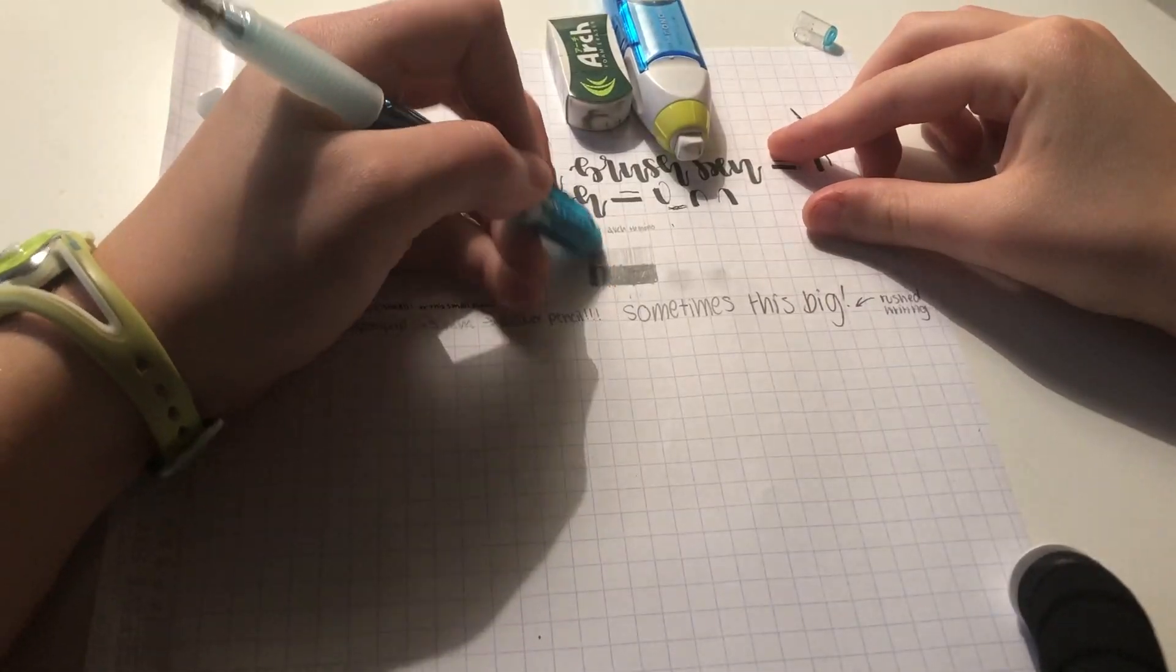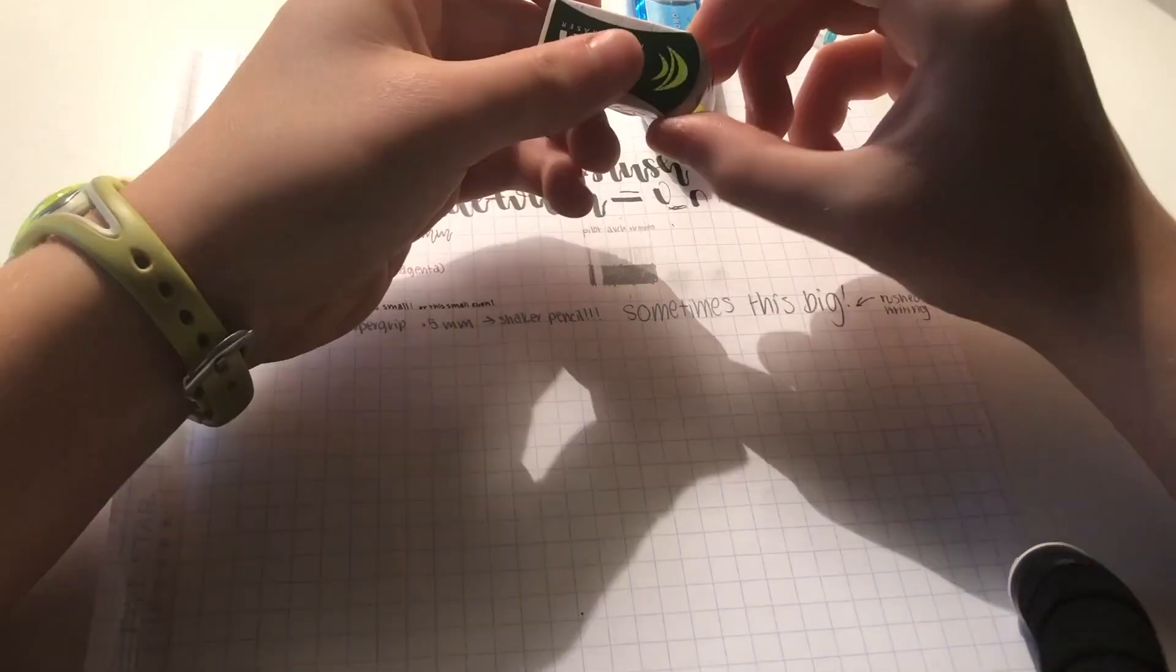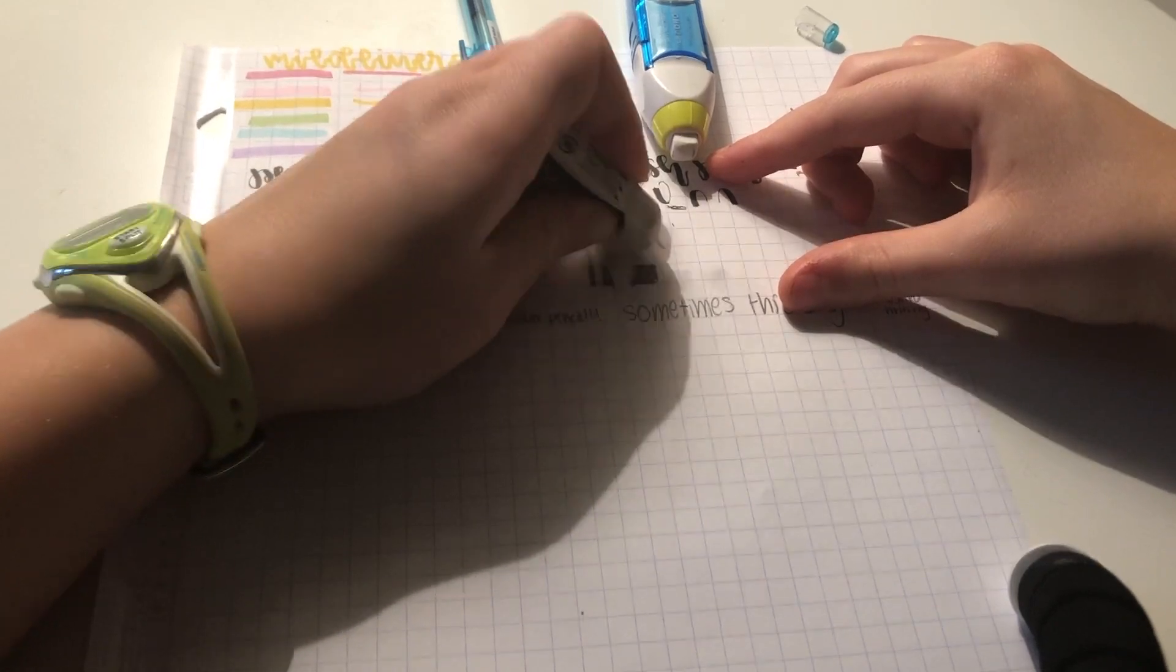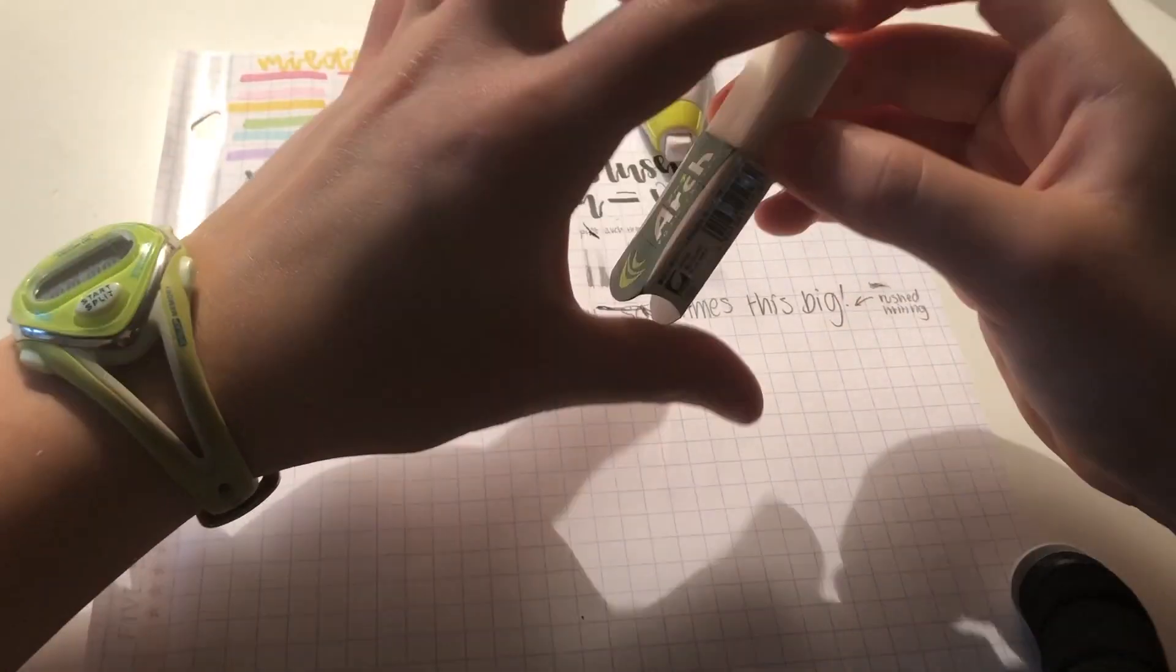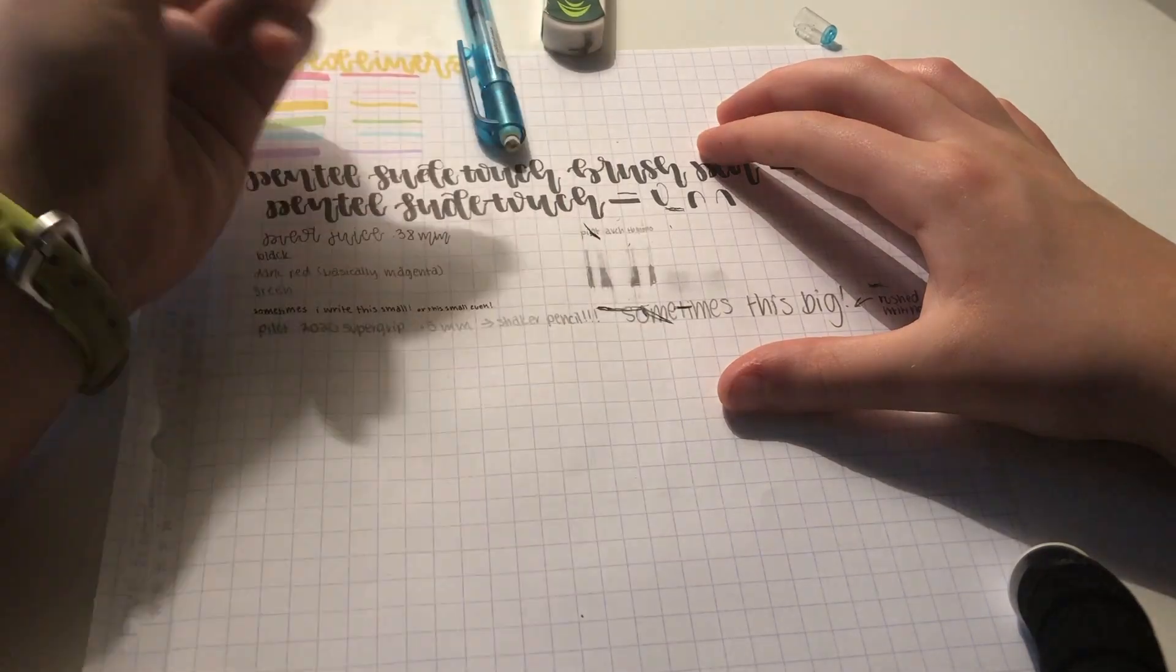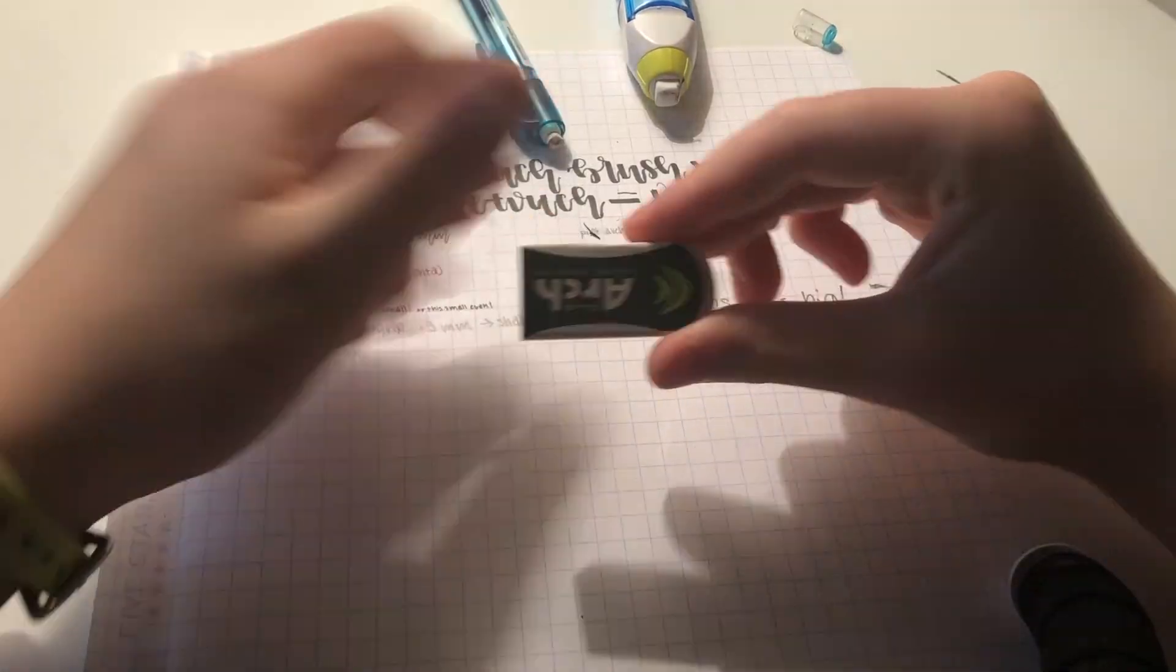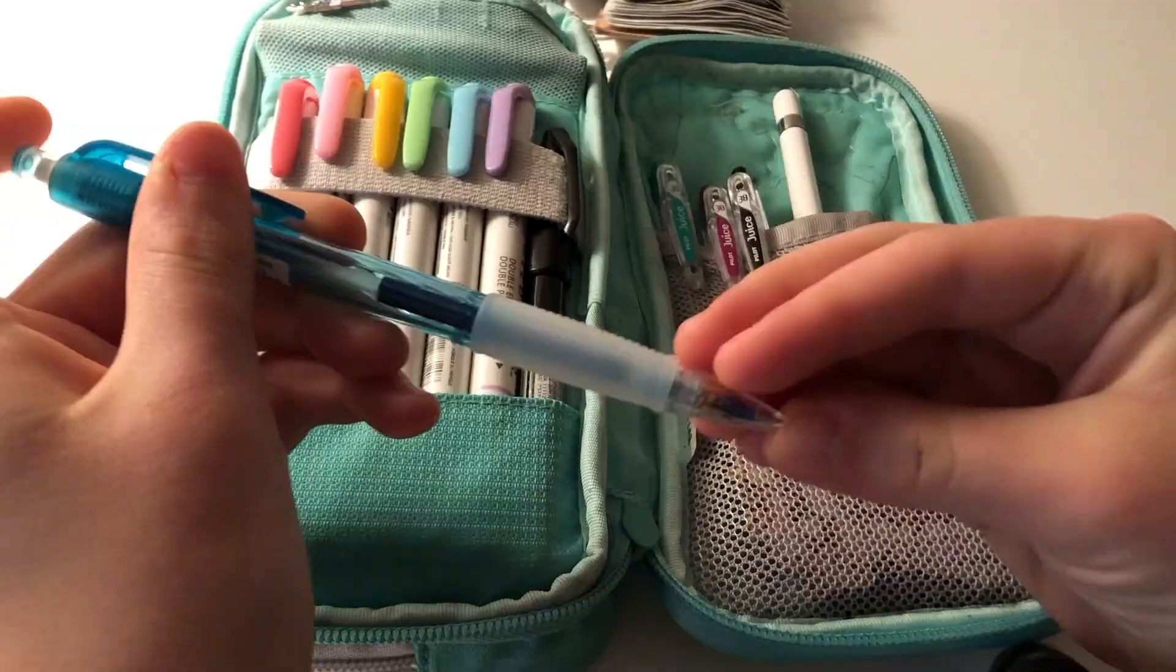Next I'm going to show some erasers. First is the one with my pencil, then the Sakura Arch which is my favorite, and the one from my Tombow Mono which you'll see later. The Arch is my favorite because it erases to the point where you can never tell there was pencil there.